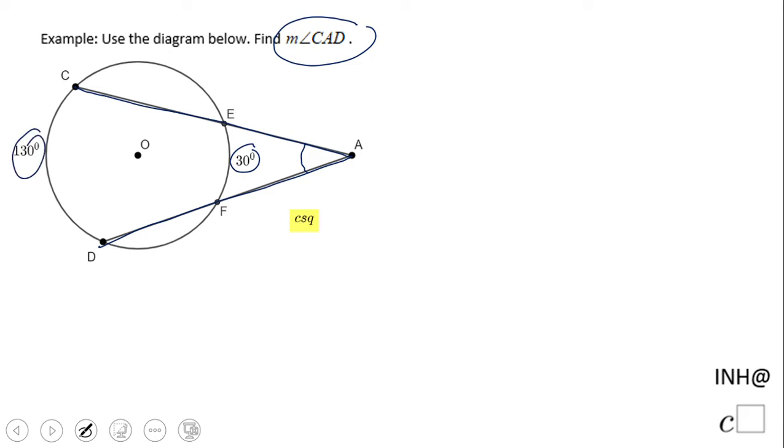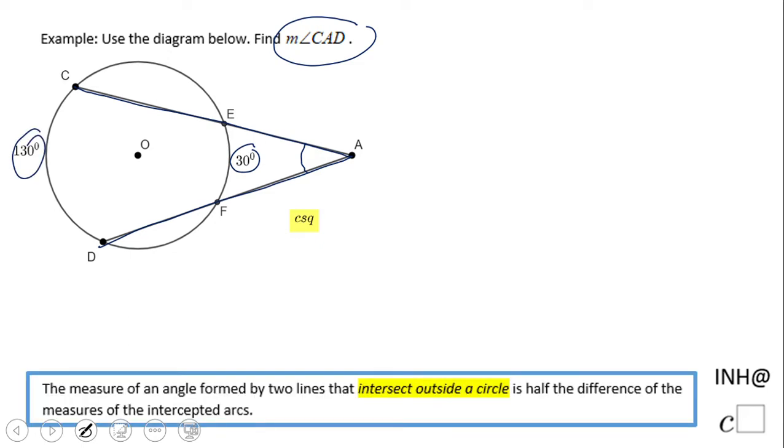This is an angle that is formed by two segments, not two lines, outside a circle. One segment, the second segment or secant, in this case you can call it a secant, and they meet here.